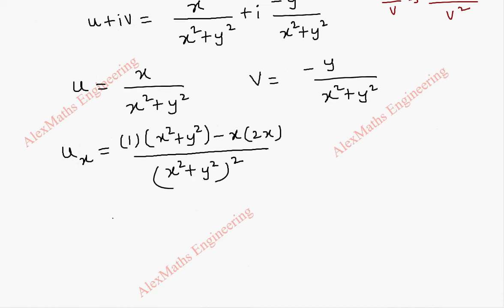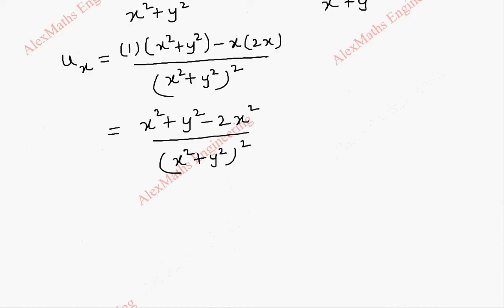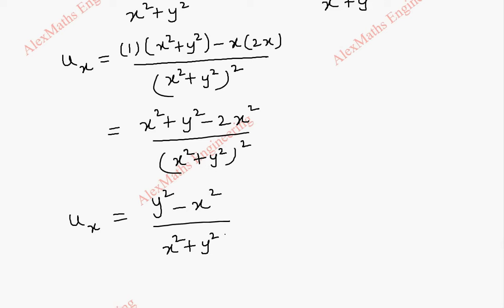Further simplifying, we get (x² + y² - 2x²) / (x² + y²)², so ux = (y² - x²) / (x² + y²)².